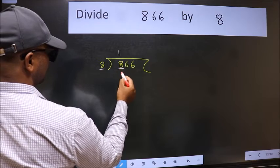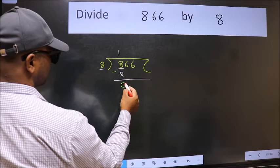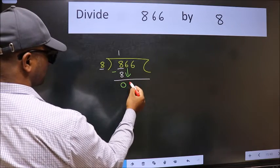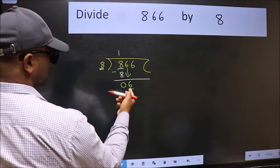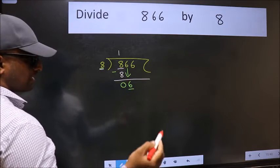8 times 1 is 8. Now we subtract and get zero. After this, bring down the number beside it, so 6 comes down. Now here we have 6, and here 8. 6 is smaller than 8, so we should bring down the second number.